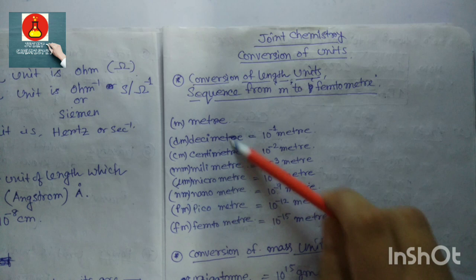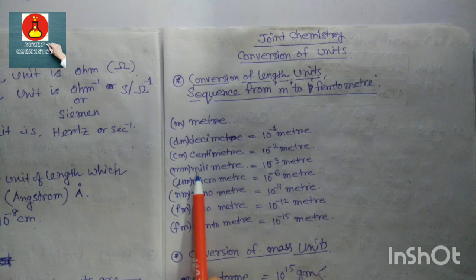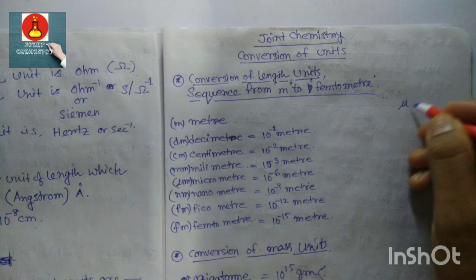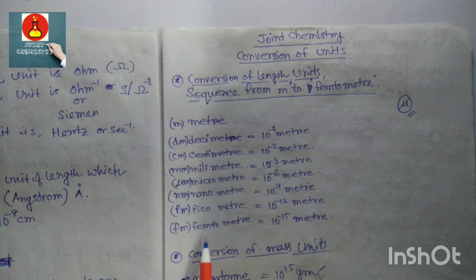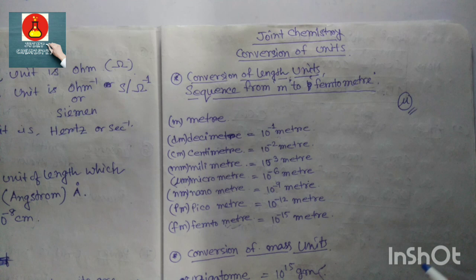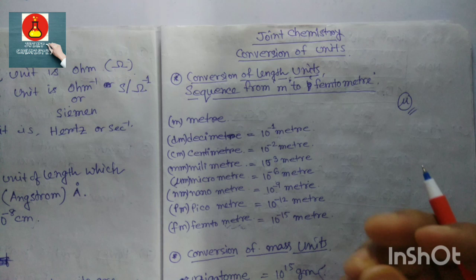The symbols for these units are: decimeter — dm; centimeter — cm; millimeter — mm; micrometer — μm (the symbol μ is called mu); nanometer — nm; picometer — pm; femtometer — fm. Femtometer is the smallest length unit, used to measure atomic nucleus dimensions.